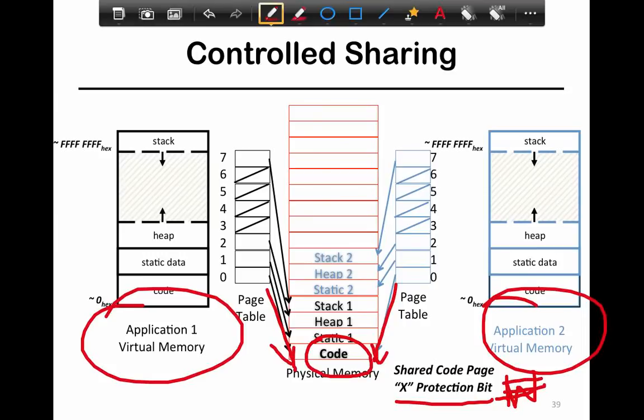Why don't we want to write? Because you have two applications mapping into it, and if one starts changing it, then the other application is going to change as well, which is a violation of protection. So whenever you have sharing, unless both applications explicitly desire and want to talk with each other, you essentially mark them as read-only.